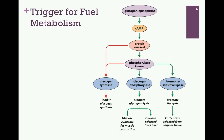Let's review the response of cells to the glucagon-epinephrine signaling pathway. Binding of these hormones to their receptors stimulates a G-protein signaling pathway that eventuates in the production of the second messenger cyclic AMP. Binding of cyclic AMP to protein kinase A thereby activates it, and protein kinase A has a dual effect on glucose metabolism. First, it inhibits glycogen synthesis by inactivating the enzyme glycogen synthase.